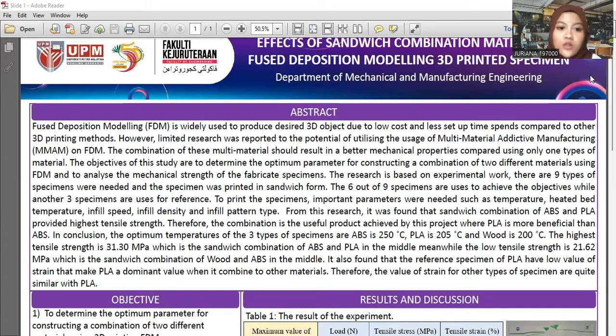The objectives of this study are to determine the optimal material parameters for constructing a combination of two different materials using FDM, and to analyze the mechanical strength of the fabricated specimens using tensile testing.